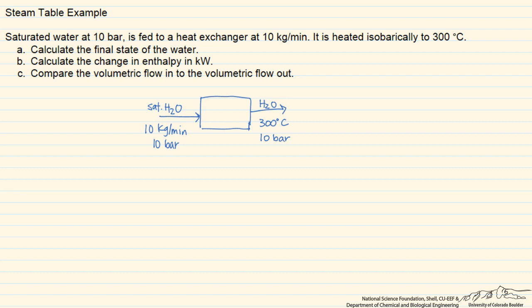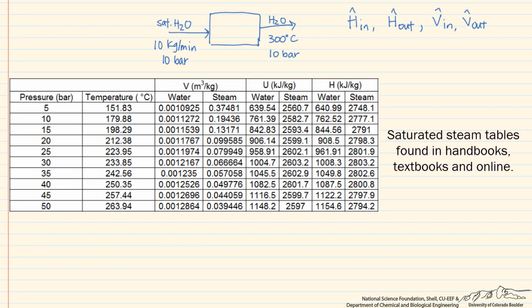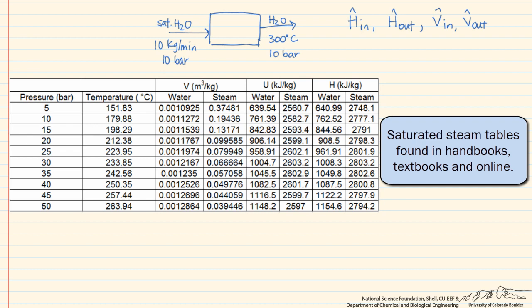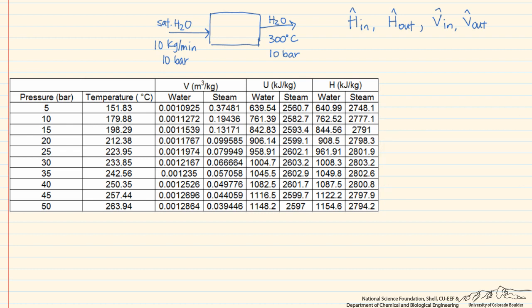First let's determine what properties we're going to need. We're certainly going to need our enthalpy coming in as well as our enthalpy coming out. In addition, we're going to need the specific volumes in order to determine the volumetric flows. Since we're given the pressure of the saturated water entering the system, we'll use the saturated pressure table.